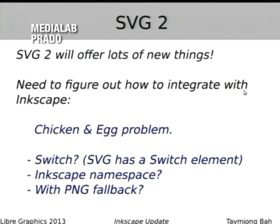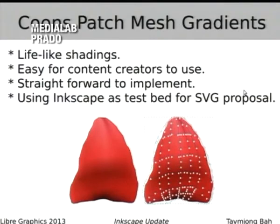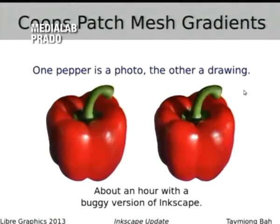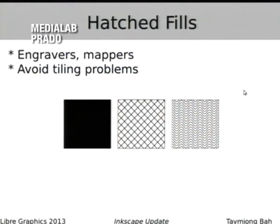For example, a mesh gradient — we need to figure out how to handle it, possibly with PNG fallback. We used Inkscape as a testbed for the SVG proposal for mesh gradients, which has been approved. If you have a trunk version with it enabled, you can actually edit mesh gradients in Inkscape. There are some nice example peppers showing how photorealistic the results can be. Hatch fills are another thing now in SVG2 that we can add to Inkscape.